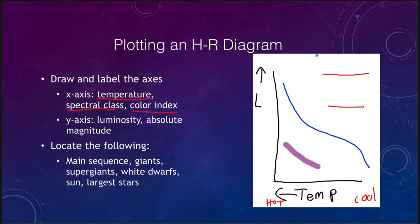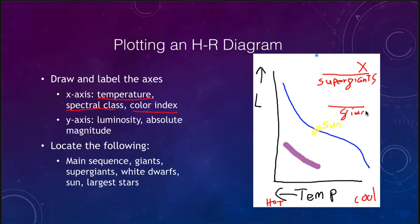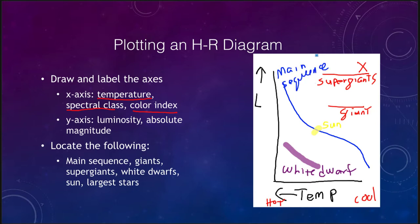Where would the sun be? Our sun is right about in the middle of the main sequence, right about here. The largest stars are up in the upper right hand corner — they're very cool but also very large, so these are the super giants. These are the giant stars here. We looked at the white dwarf stars, and then the main sequence. So we have all of these different types of stars located in the HR diagram.